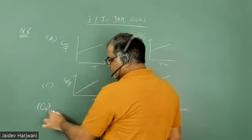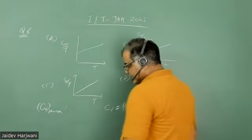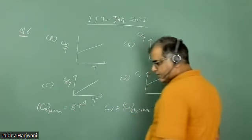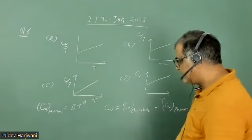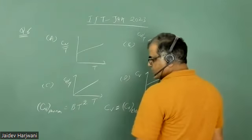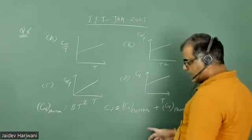The specific heat contribution due to phonon is given by BT^D, where D is the dimension of the solid. For a two-dimensional solid, D equals 2, so the phonon contribution becomes BT².